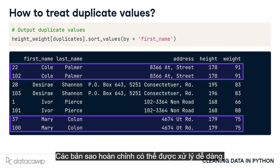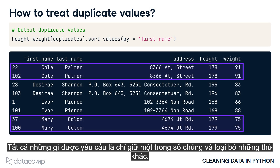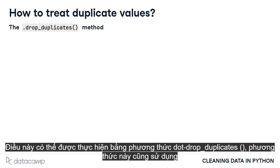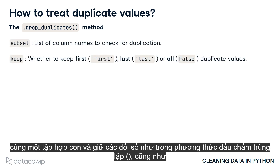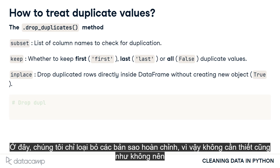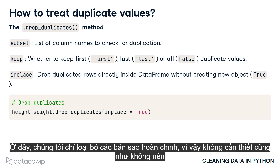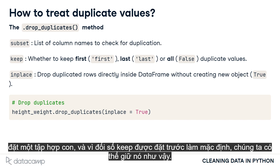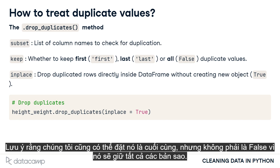The complete duplicates can be treated easily — all that is required is to keep one of them and discard the others. This can be done with the .drop_duplicates() method, which also takes in the same subset and keep arguments as the .duplicated() method, as well as the inplace argument, which drops the duplicated values directly inside the height-weight dataframe. Here we are dropping complete duplicates only, so it's not necessary nor advisable to set a subset. Since the keep argument defaults to 'first', we can keep it as such. Note that we can also set it to 'last', but not to false, as that would keep all duplicates.